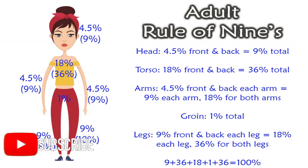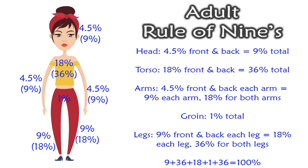Alright guys, let's look at the adult version of the Rule of Nines. The head is 4.5% for each the front and the back, so the front is 4.5%, the back is 4.5%, and the entire head is 9% total. Moving on to the torso, you have 18% each front and back — 18% on the front of the torso, 18% on the back, for a total of 36%. The arms: the front of the arms is 4.5%, the back of the arms is 4.5%, one entire arm is 9%, and both arms equals 18%. The groin, whether male or female, is 1%, and then the legs are 9% for the front, 9% for the back, 18% per leg, and 36% when you do both legs.